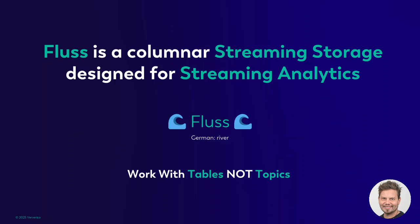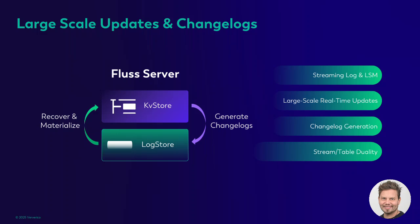The first thing you'll notice in Fluss is that it works with what analytical workloads work best with — tables, not topics. So we go from topics and partitions to tables and the concept of buckets, which is similar to partitions. For reference, Fluss derives from the German word for river, so let your data flow through Fluss. Similar to Kafka, Fluss has a log store for storing the immutable log, but compared to Kafka it can generate a complete changelog. To account for tables, Fluss also has a key-value store which stores the latest value for each key.